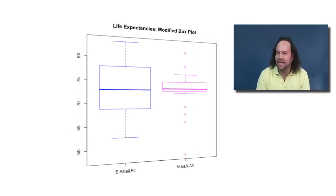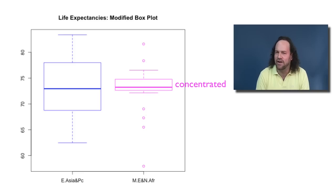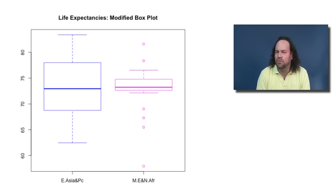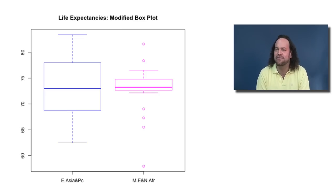If we look at a modified box plot of the two regions side by side, we can see more detail. Most of the Middle East and North Africa data is concentrated very closely around the median, which is why the quartile boxes are so small. But there are a few countries in the Middle East and North Africa with very high life expectancies, and a few with very low life expectancies, visible as outlier circles outside the extensions. So in this case, the center of the data is pretty comparable, but the spread of the data is quite different.